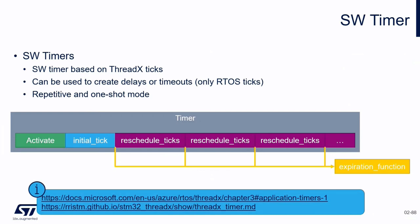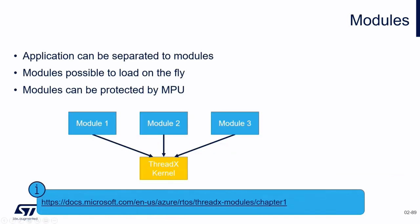Software timers provide the application the ability to execute a function at specific intervals of time. Normally we have hardware timers in STM32, but you may want to use software timers. We can have one-shot timers or periodic timers. For more details, refer to the Microsoft documentation.